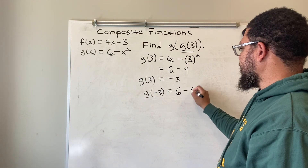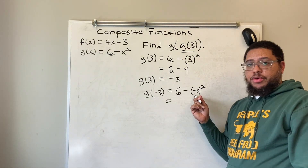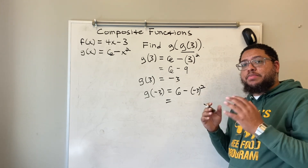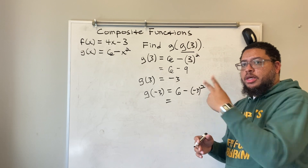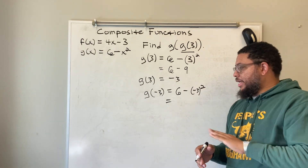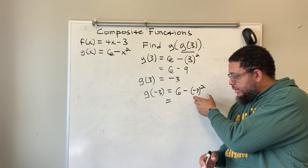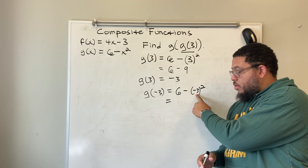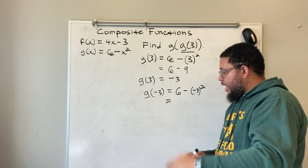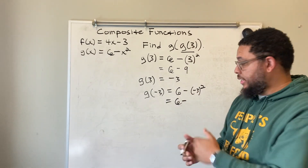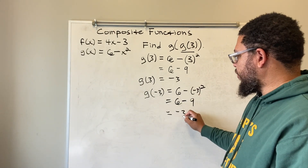So now I'm doing 6 minus negative 3 squared. Follow order of operations. Negative 3 squared — the negative sign is inside the parentheses — means negative 3 times negative 3, which is positive 9, because the exponent 2 means the base appears twice in the multiplication. It does not mean negative 3 times 2. So negative 3 times negative 3 is positive 9. Now I have 6 minus positive 9, which is 6 minus 9, which equals negative 3. That's our final answer.